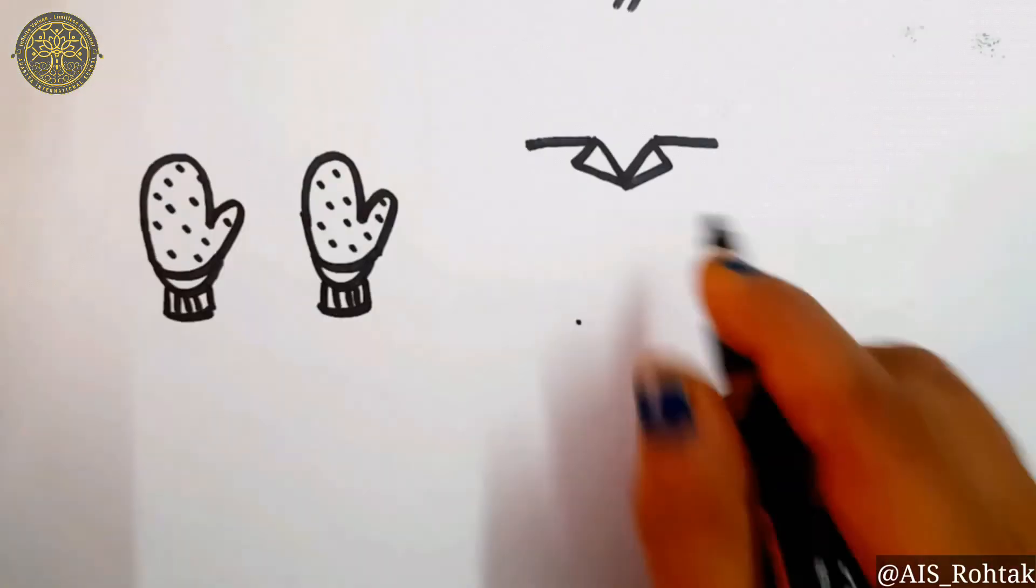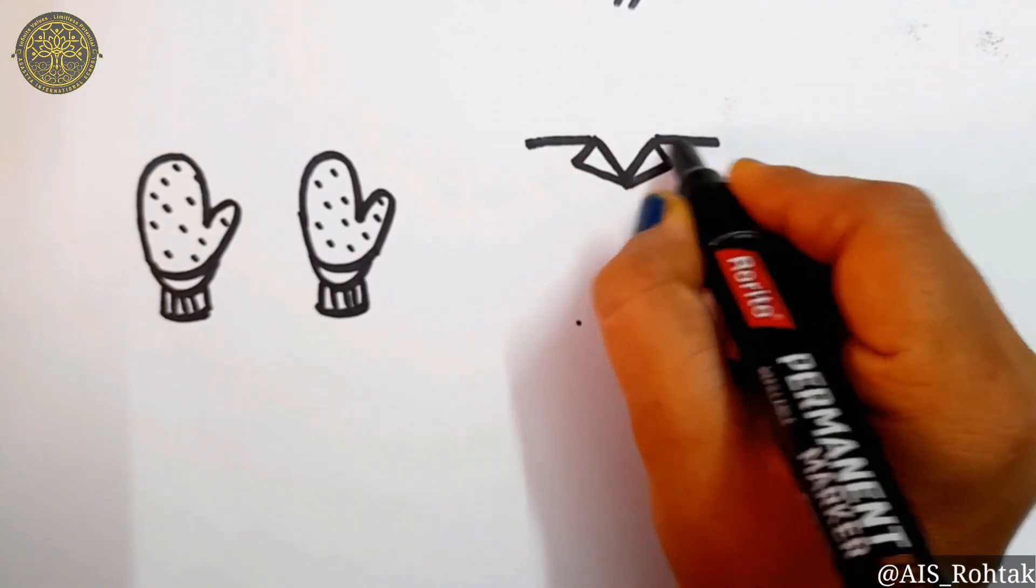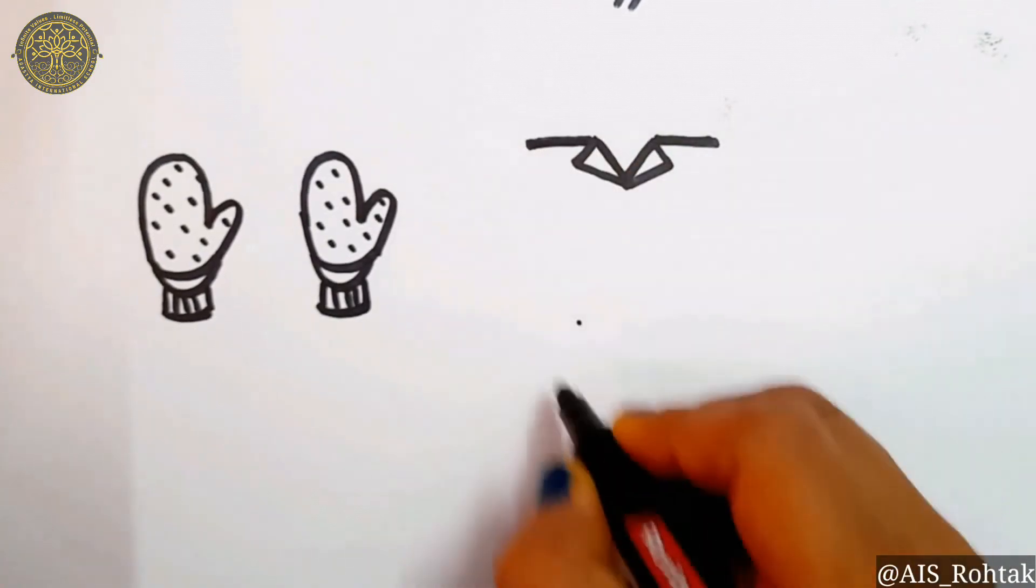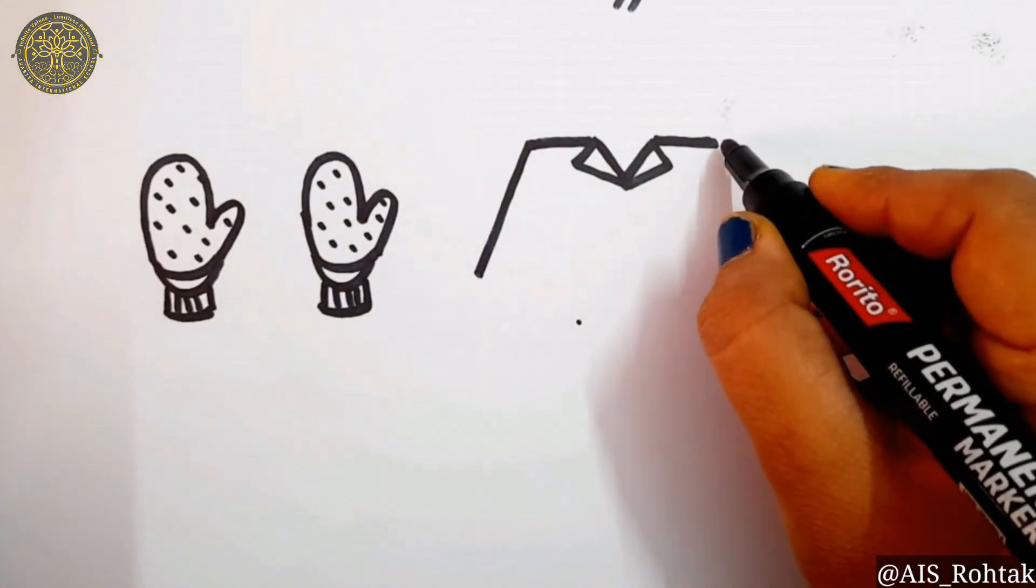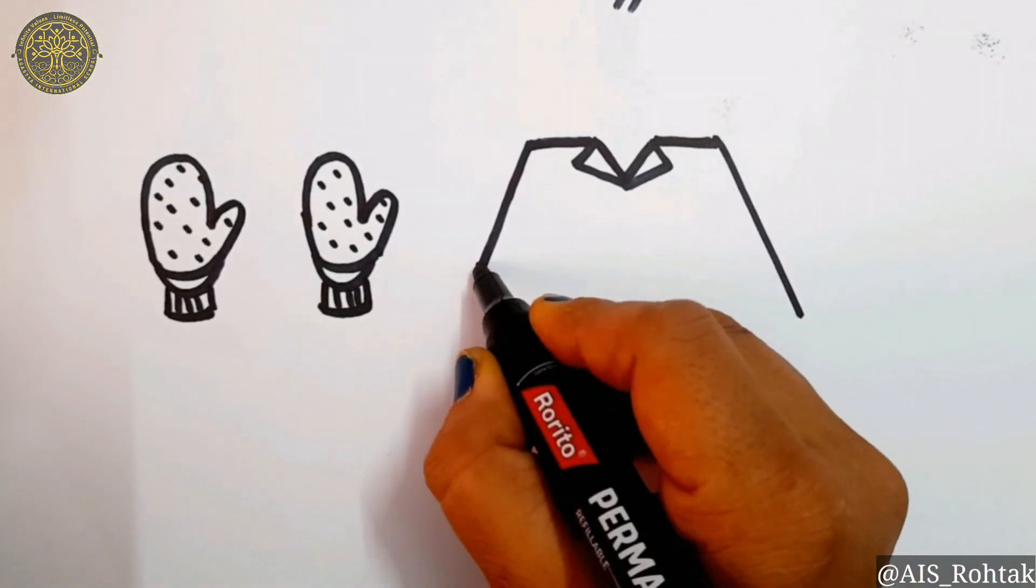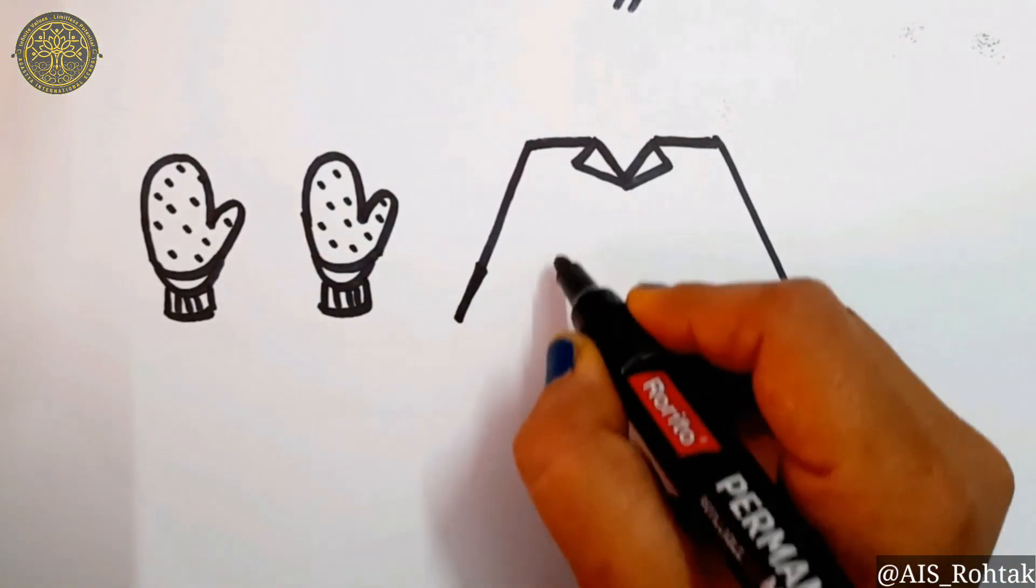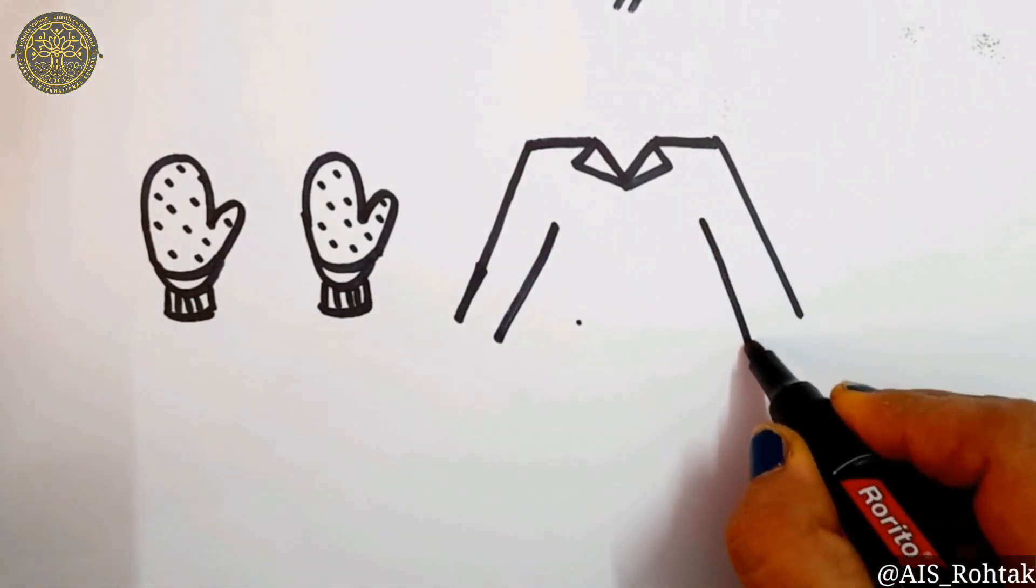To draw a coat, just draw a letter V. Then make the collar like this. Then two sleeping lines on each side. After that, just draw two slant lines for the arms of the coat. And join it like this with a standing line or slant line.